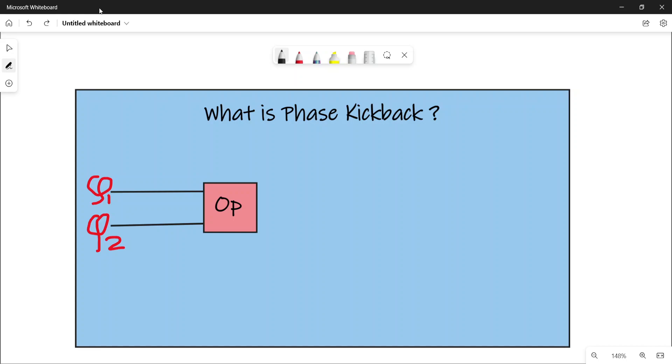What is phase kickback? Consider this circuit diagram with two qubits, Q1 and Q2. You can also interpret them as two different sets of qubits. Now consider some operation represented by this block 'Op.' Because of this operation Op,